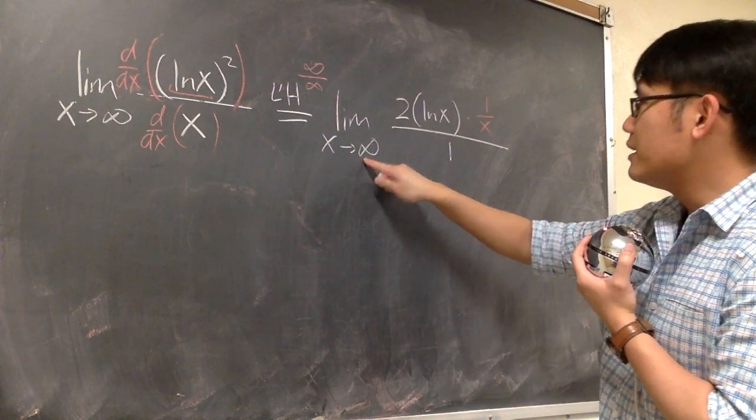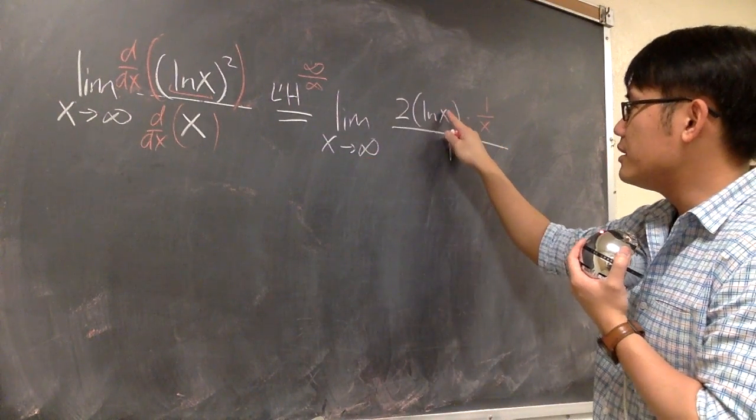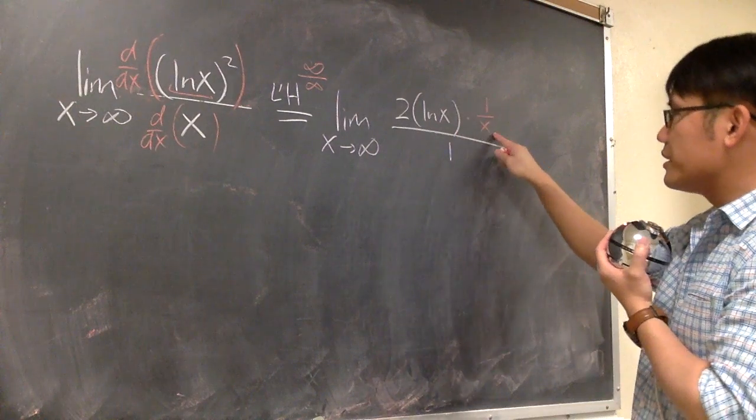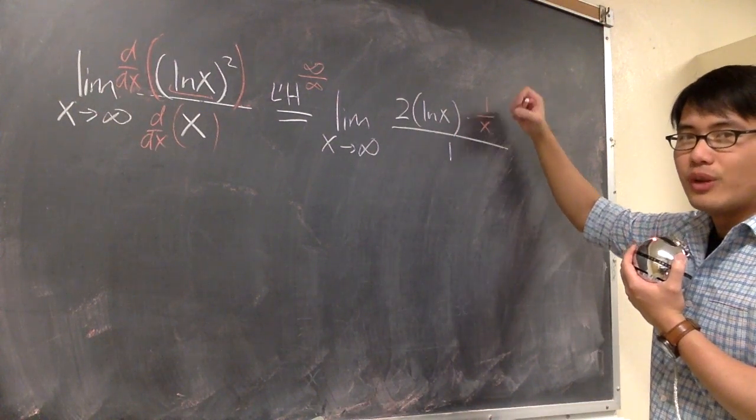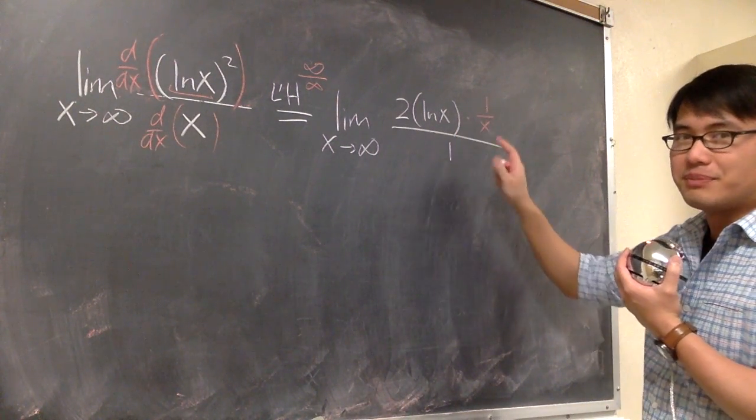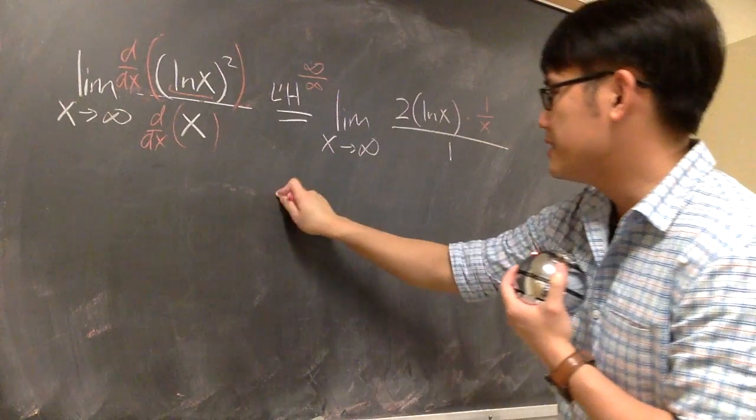But then the trouble is this. You see, if you have infinity into here, you have infinity. If you have infinity here, you have 1 over infinity, which is 0. So this is bad.